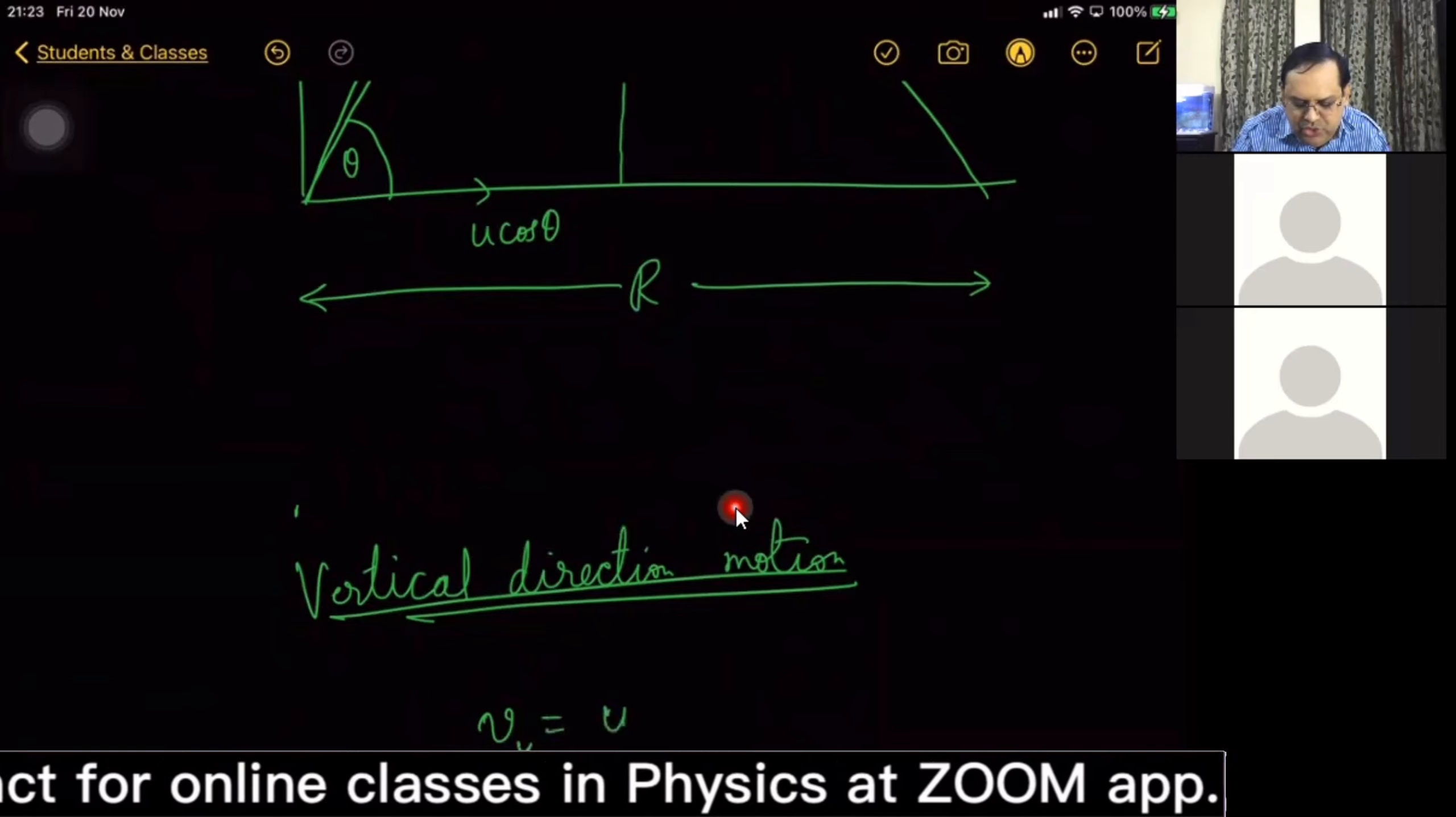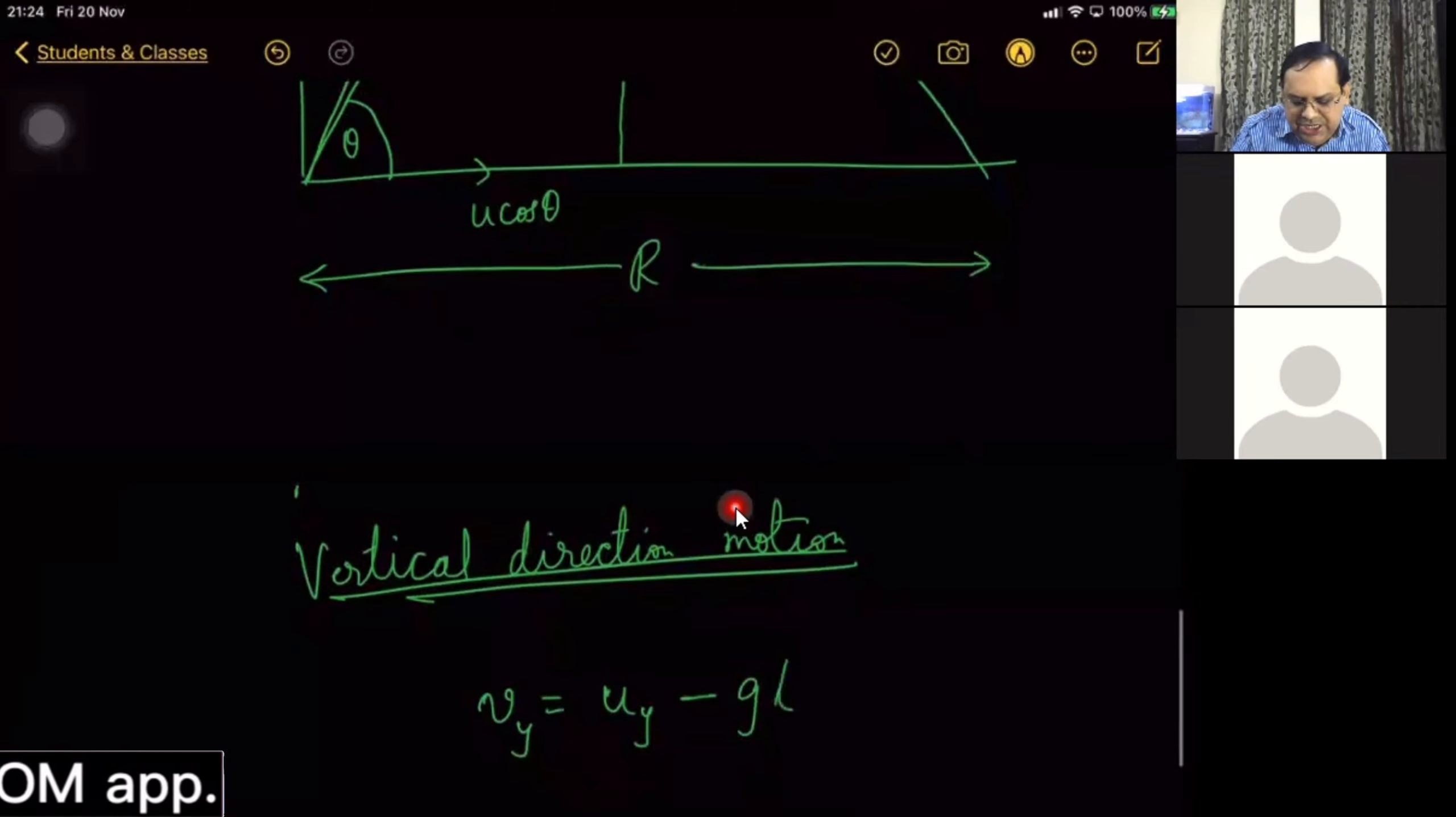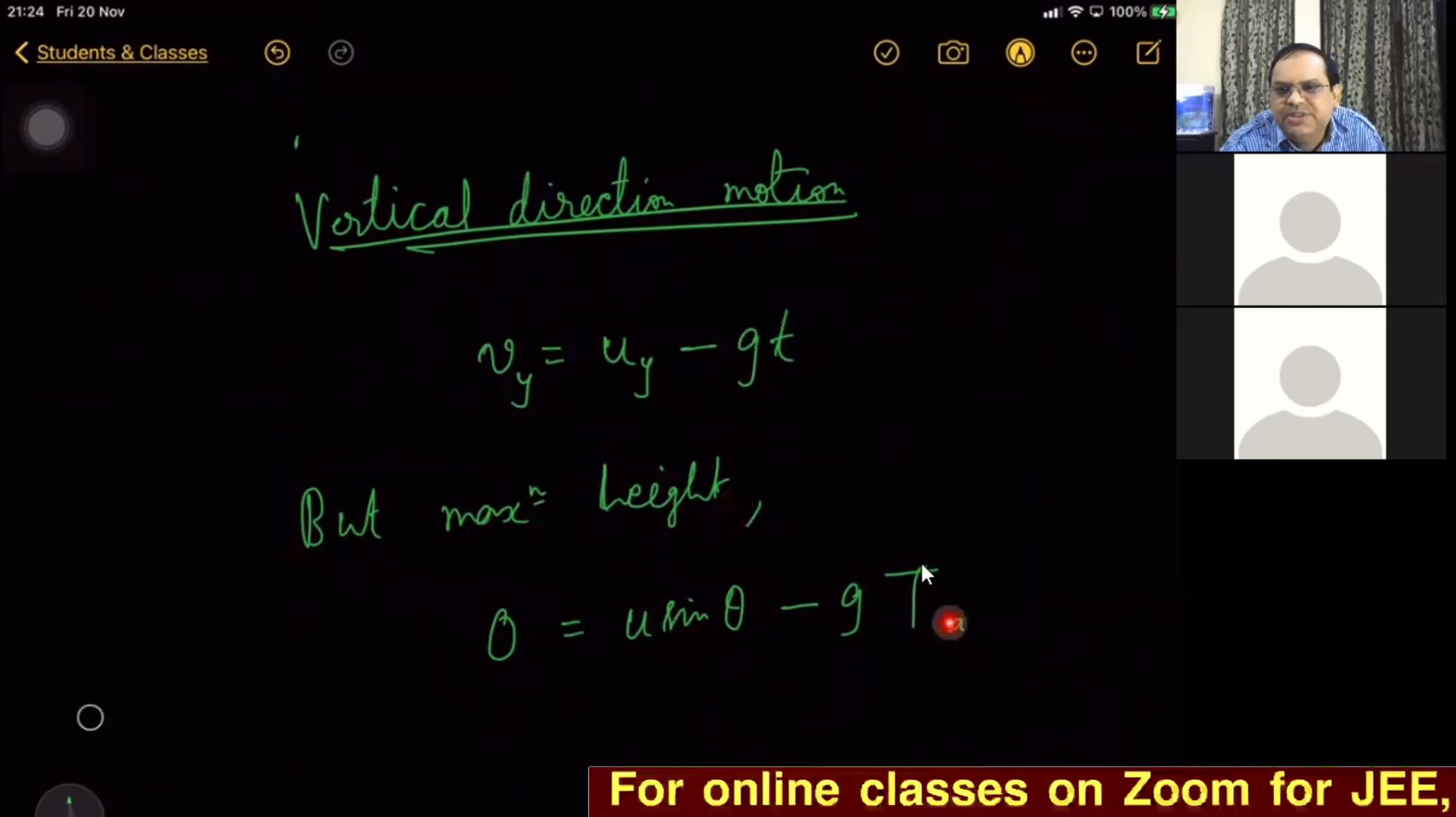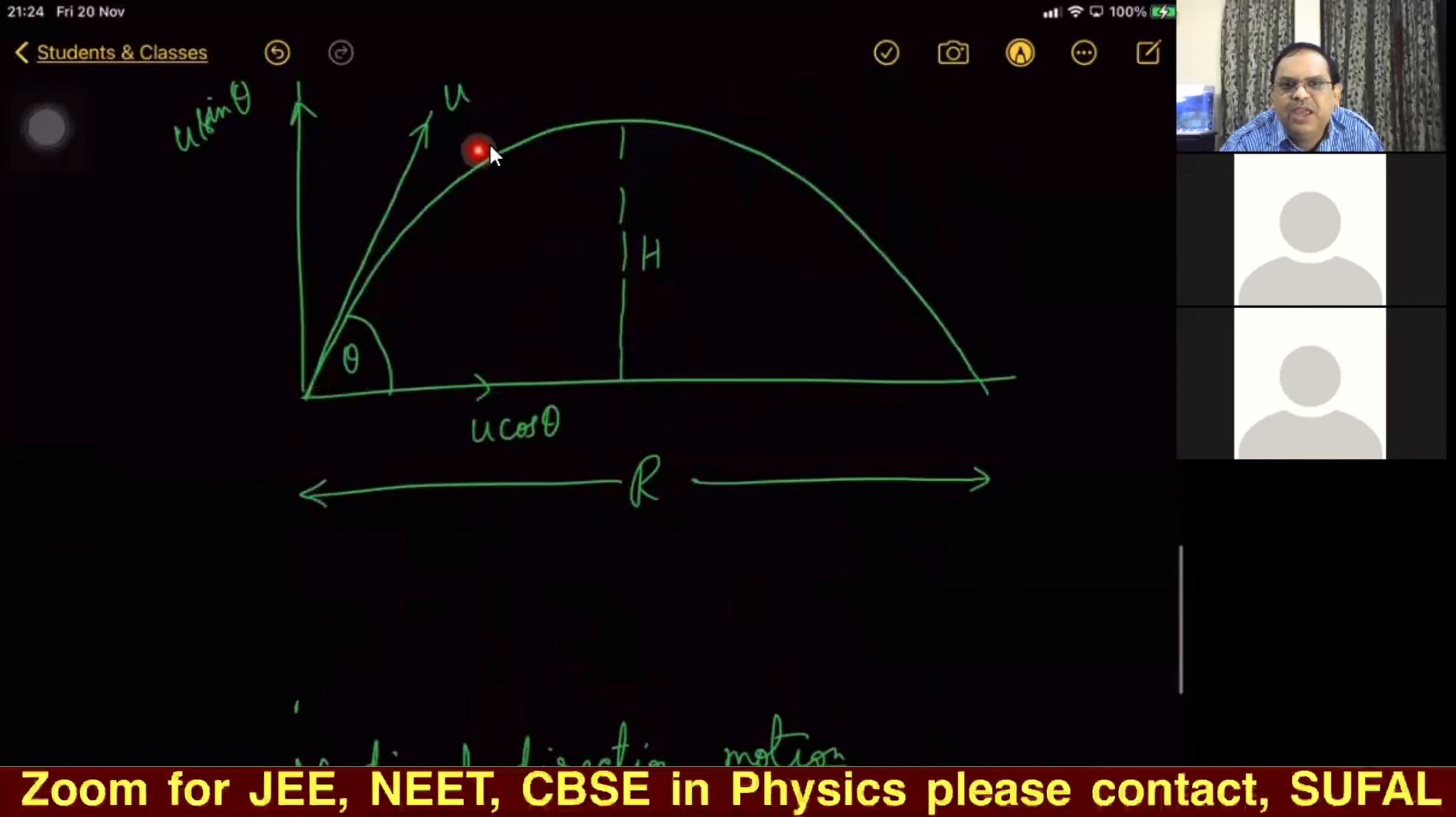But at maximum height, what will happen? v_y will be zero, and u_y will be u sin θ - gT_a. Why did I use T_a, time of ascent? Because from here to here, particle is taking only time of ascent to reach.